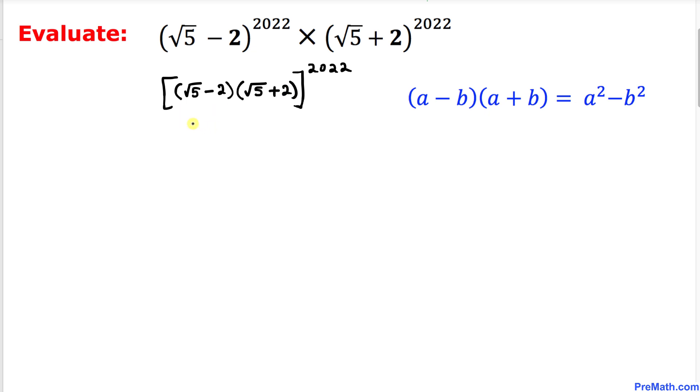This can be written as square root of 5 squared, minus 2 squared, then the whole thing to the power 2022.